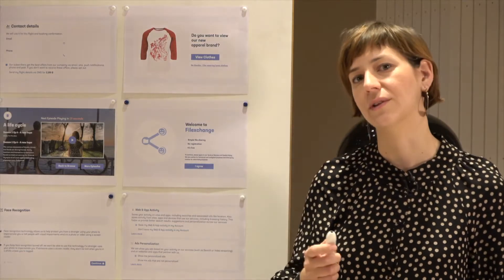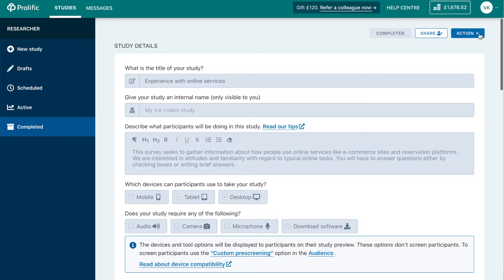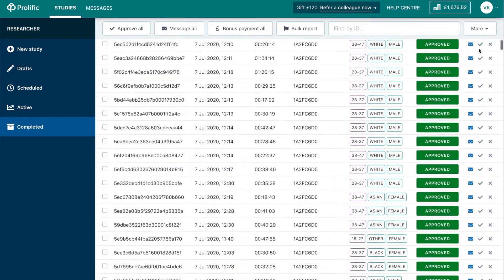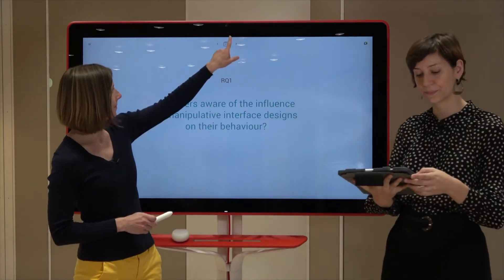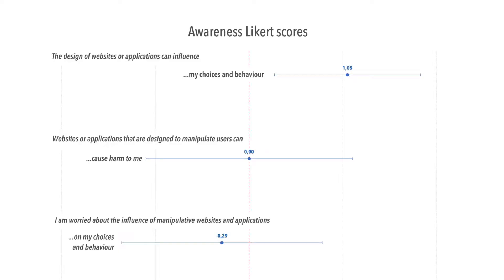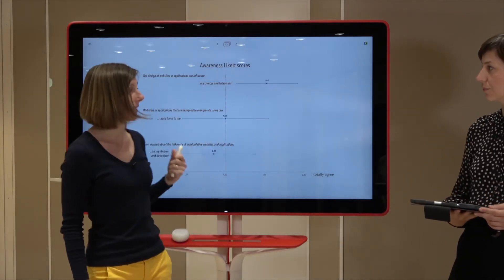So we managed to gather answers from 406 participants, and it's a representative sample of the UK population in terms of age, gender, and ethnicity — thank you, Prolific! And if you remember, our first research question asked whether people are aware of manipulative designs in online environments. These are the three statements that people had to rate from 'I don't agree at all' to 'I totally agree.' And we see that people agree — they are quite aware that manipulative online interfaces exist.